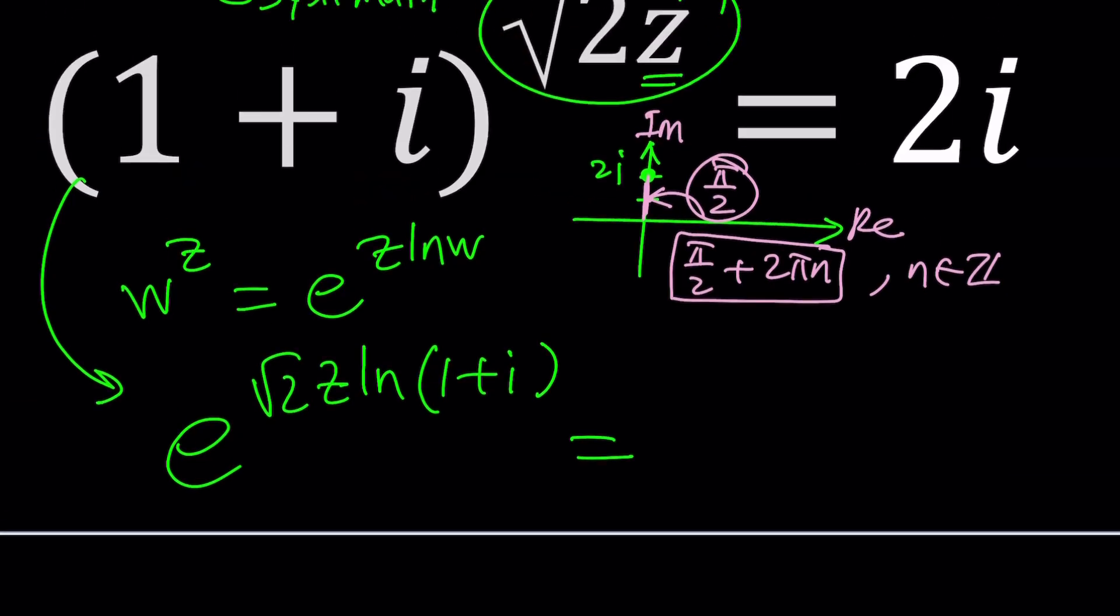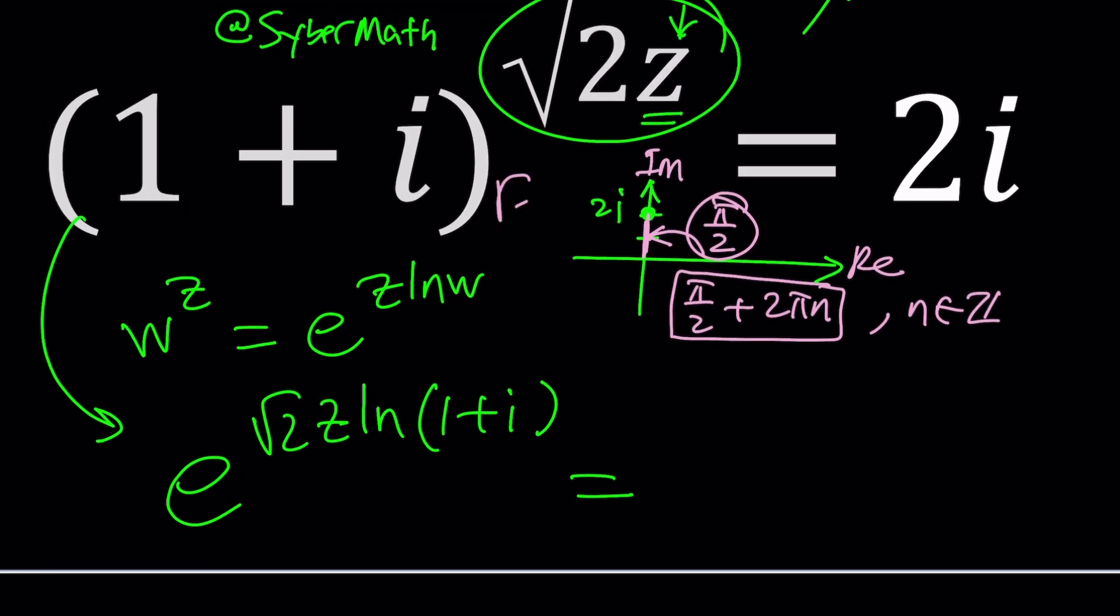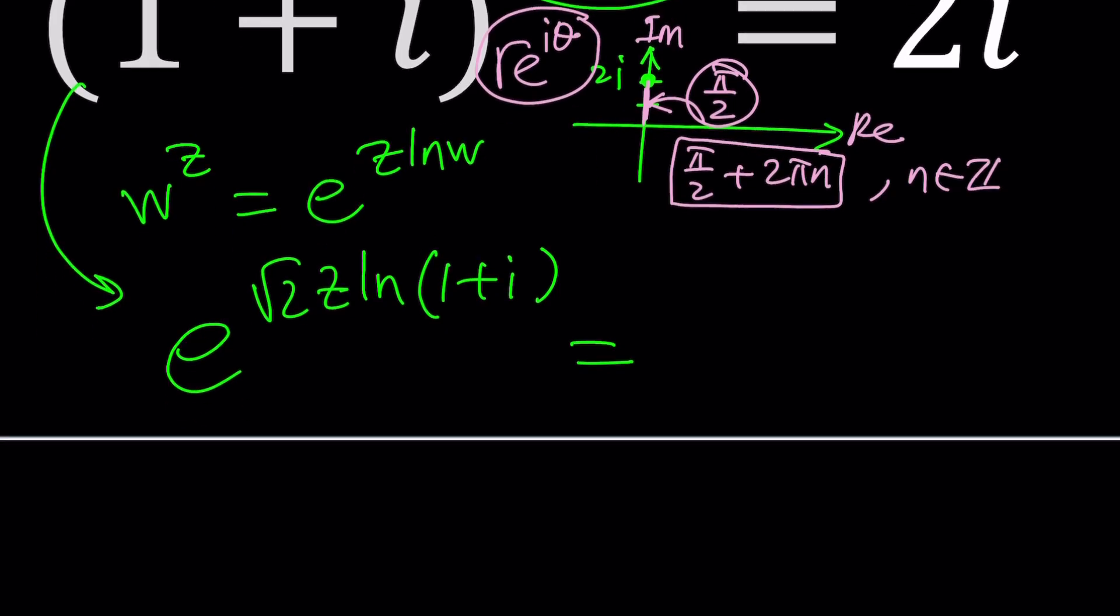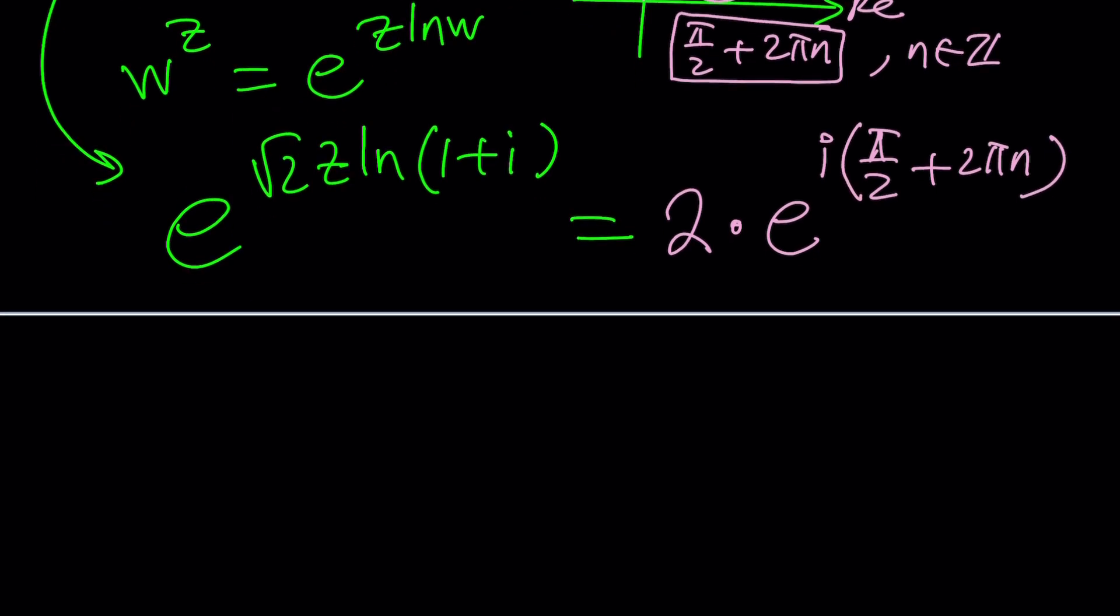So this is the general solution so it's going to give you multiple values but that's why it's called multi-valued but if you wanted to go with the principal value, principal argument, which is the angle, then you can go with pi over 2. So I'm going to show you the general form.